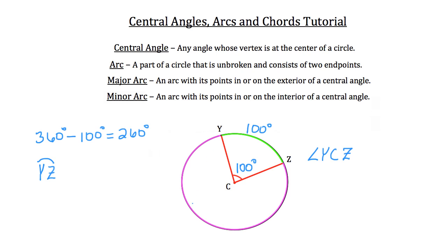So one way to make it easier is if there happened to be another point. I'm going to draw in point W down along the bottom here. Now it would be easier to indicate the major arc because that would be Y, W, Z. And we would draw an arc over the top of that as well. So the one on the left is the minor arc and the one on the right is the major arc.